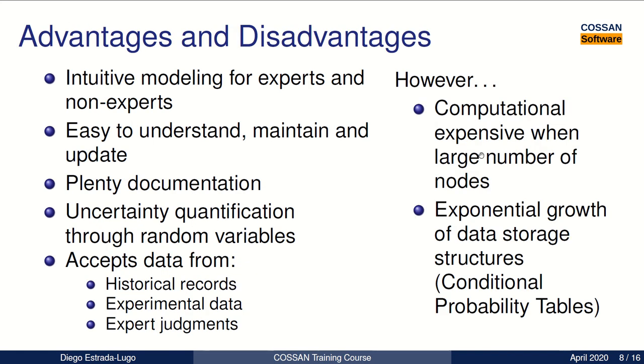So the advantages of Bayesian networks is that they are intuitive for modeling, not only for experts, but also for non-expert people. And they are easy to understand, maintain and update, because we can insert new information in the way of evidence. We have plenty of documentation as there are a lot of tutorials, books and video tutorials as well. We can do uncertainty quantification through the use of random variables.